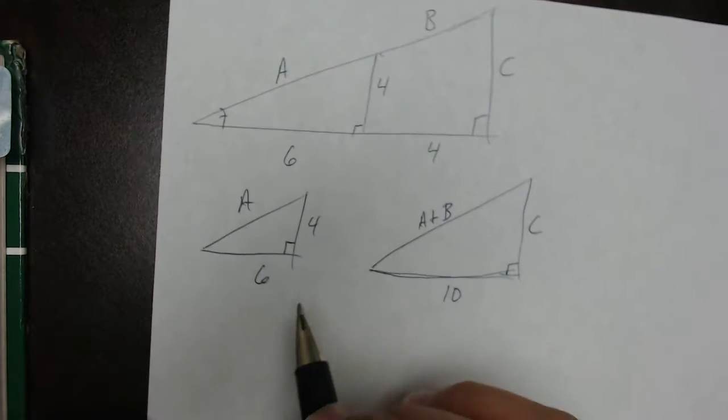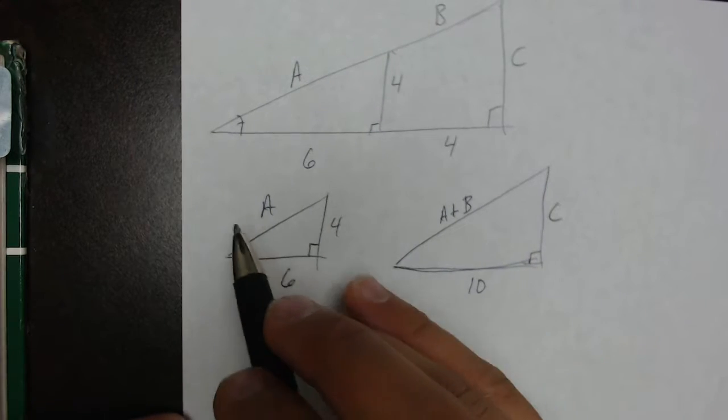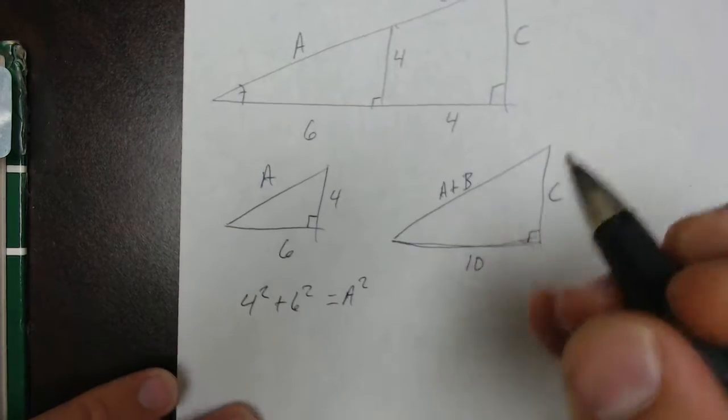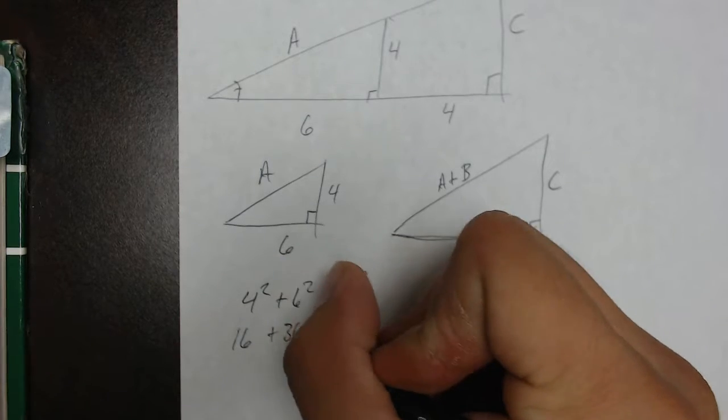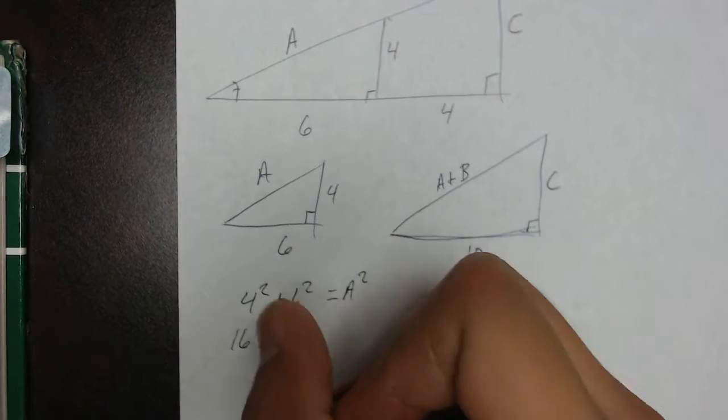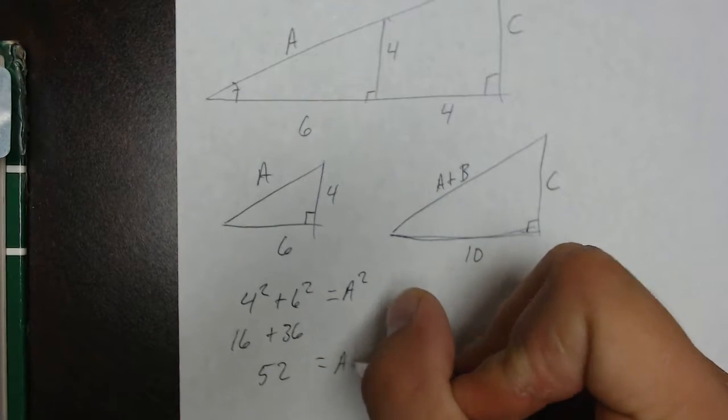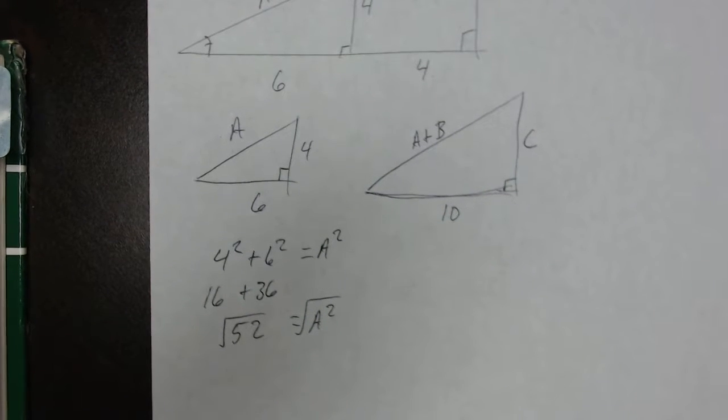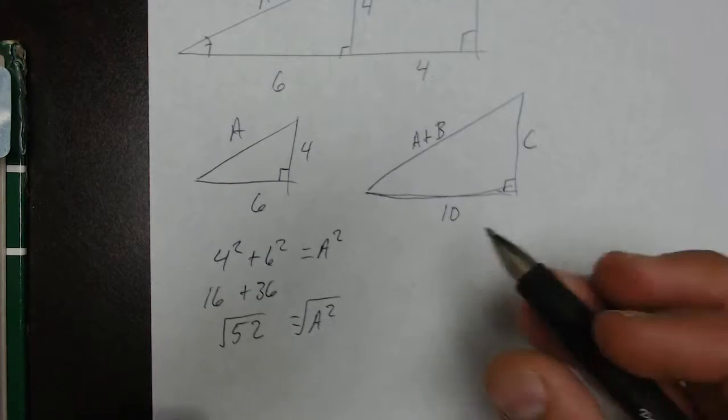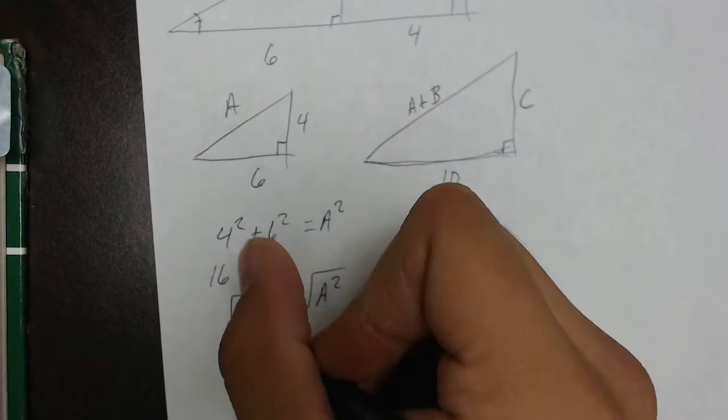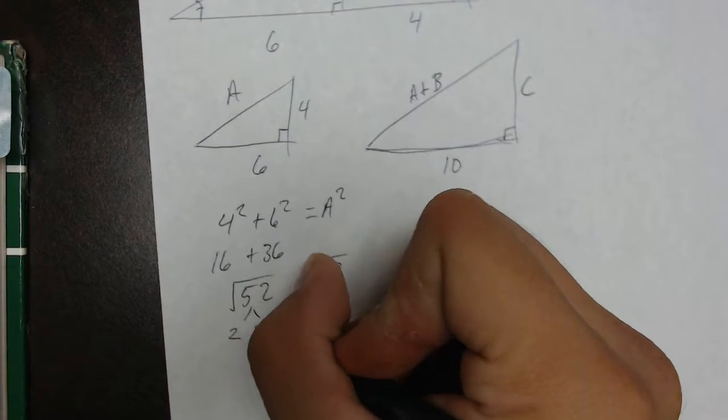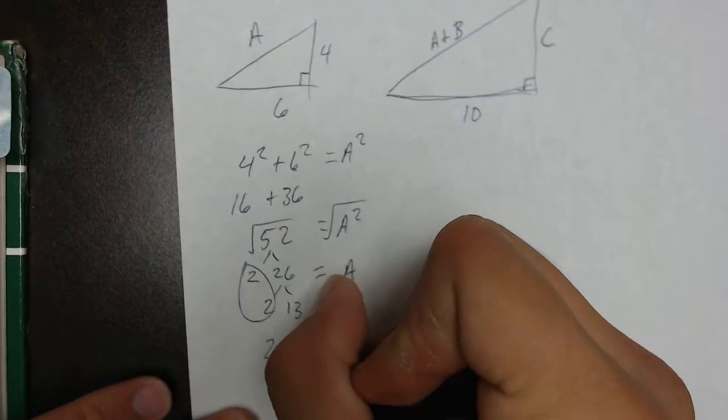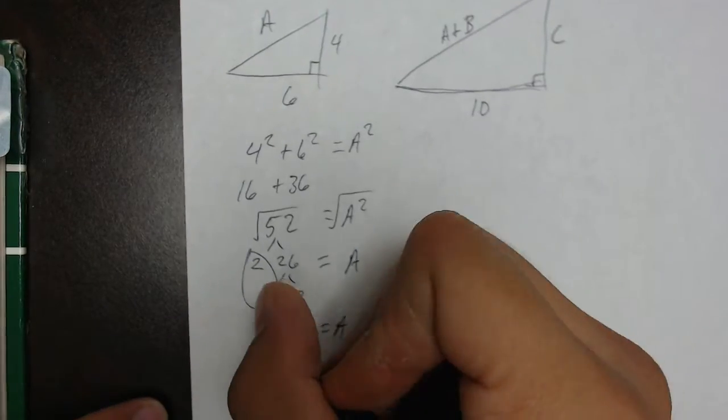From here, we go right back into our solving procedures. This small triangle, we can solve for A using Pythagorean theorem. We can write 4 squared plus 6 squared equals A squared. 4 squared is 16, 6 squared is 36. When we add those, we get 52. The square root of A squared is just going to be A. If we factor 52, we can get 2 and 26, and 26 will become 2 and 13. So A would equal 2 times the square root of 13.